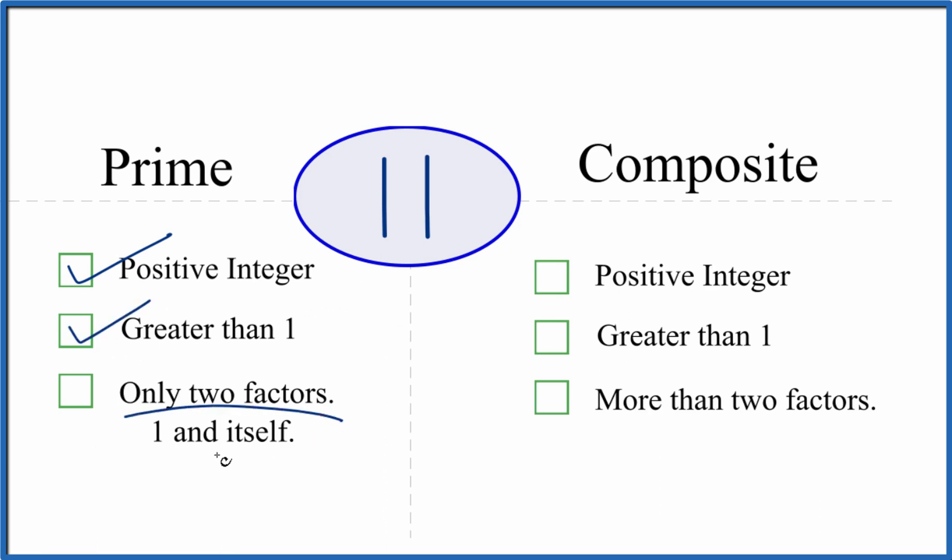And are there only two factors, 1 and 11, that will divide evenly into 11? Because we know 1 times 11, that equals 11. So there's one, two factors. But are there any others?